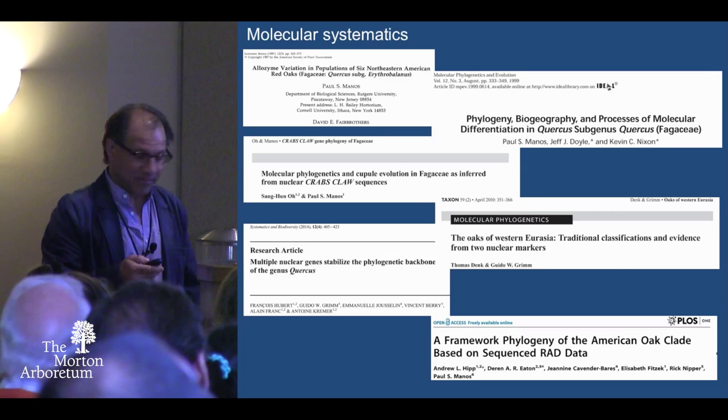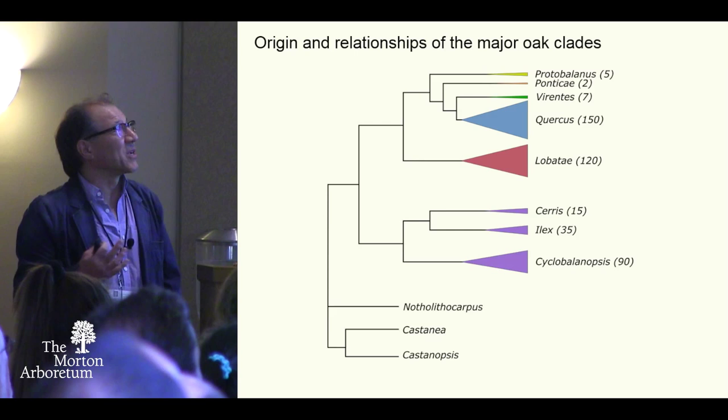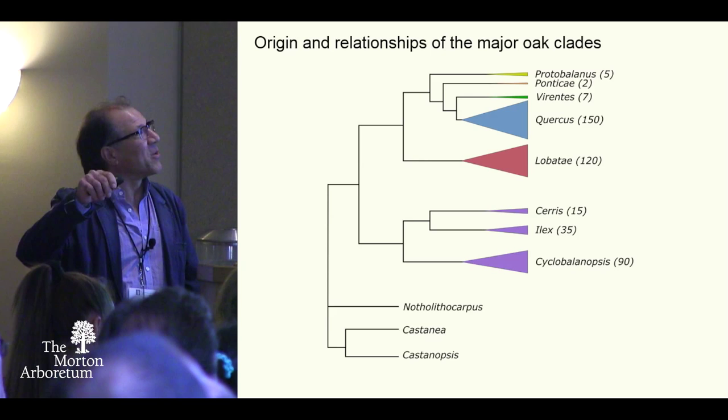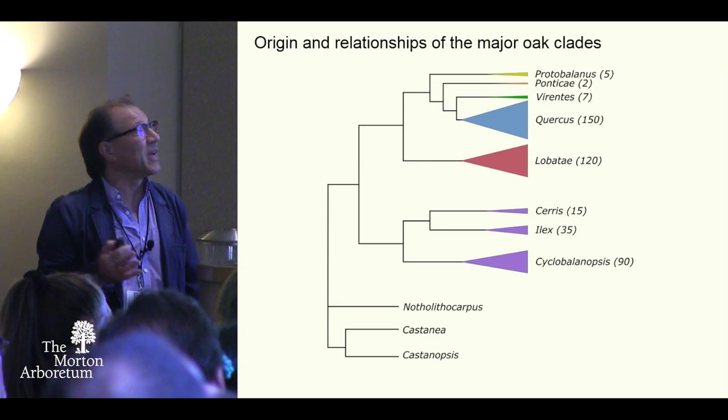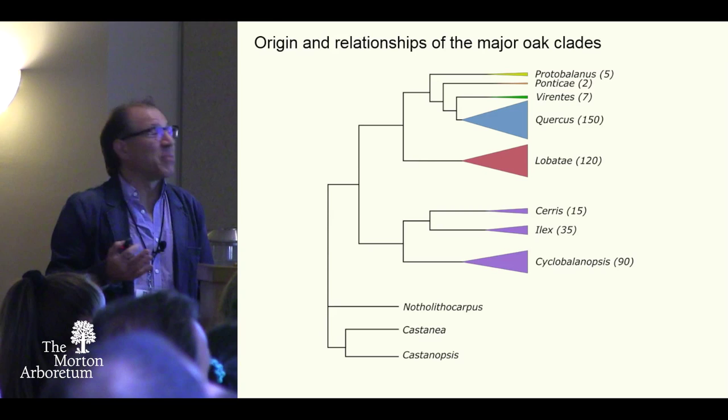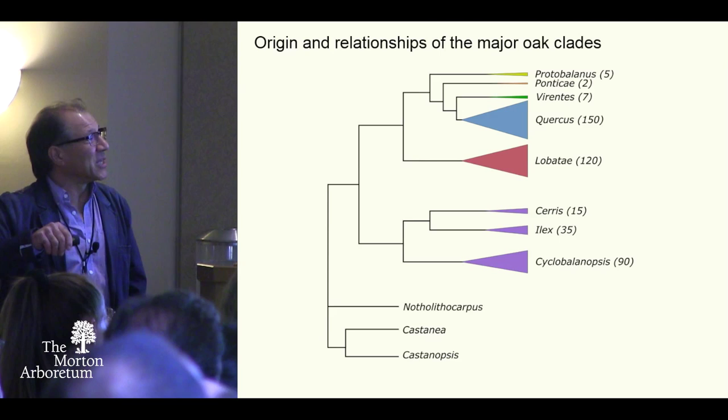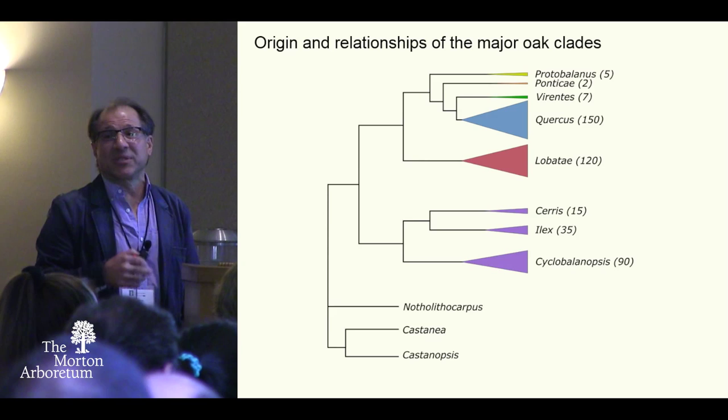So here's what we have — the origin and relationships of the major oak clades. There are two major groups: what we refer to as the American oak clade, and the Old World groups — Cerris, Ilex, and Cyclobalanopsis. I have approximate species numbers for each group; the size of those triangles is roughly proportional to that. The closest relatives of oaks right now would possibly be Notholithocarpus in western North America, and Castanea/Castanopsis. Those are possible sister or close relatives of the oaks, so we think about a single origin of the oaks.